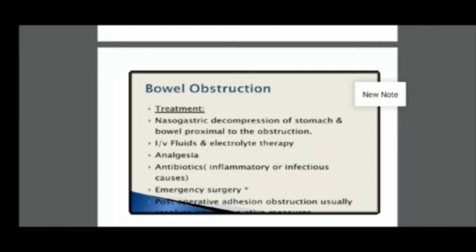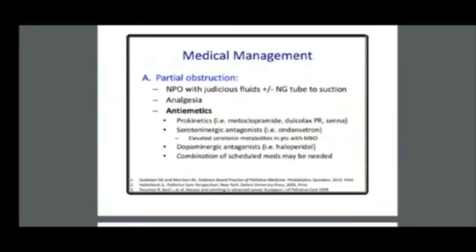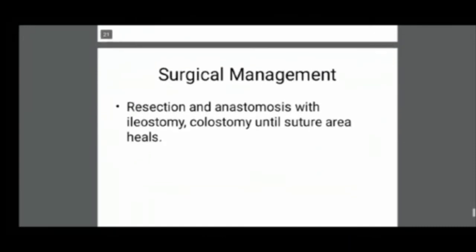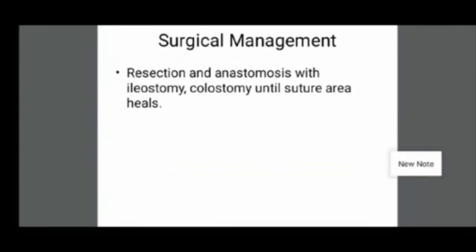Antibiotics are given if the obstruction involves peritonitis. The patient is then posted for emergency surgery. The management includes NPO with judicious fluid, NG tube to suction, analgesia, and sometimes anti-emetics in case of partial obstruction. Surgical management involves removal of the mechanical obstruction — resection of the bowel and end-to-end anastomosis. Following resection and anastomosis, an ileostomy or colostomy is also done until the suture area is healed. Sometimes a portion of the intestine is removed and the ileostomy or colostomy is permanent.